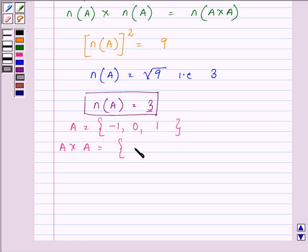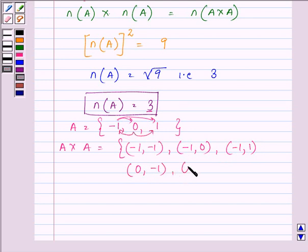A×A will have: first (-1, -1), then (-1, 0), (-1, 1), then (0, -1), (0, 1), and of course (0, 0).